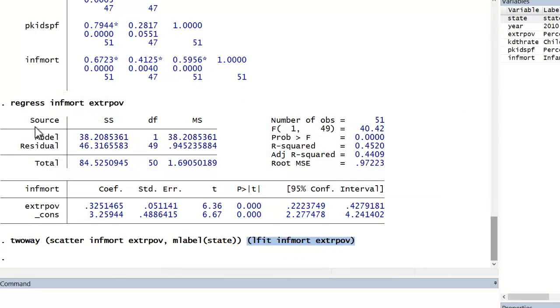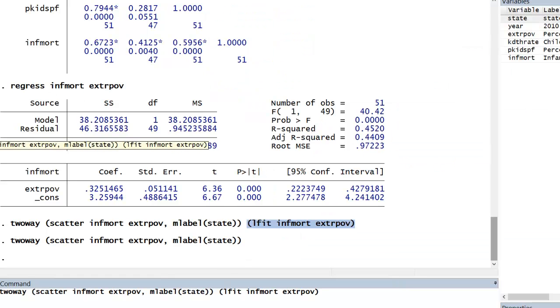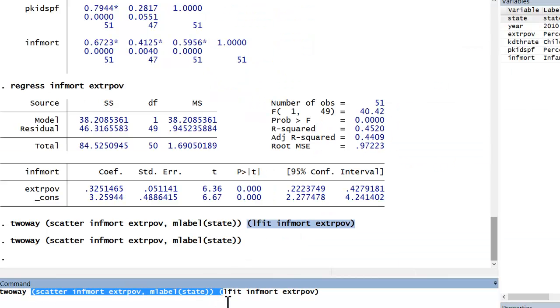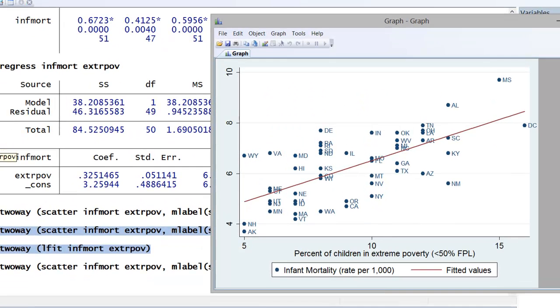If I wanted to run these separately, I could. Let's just go ahead and remove lfit. There's the separate scatter plot. Or I can just run the fitted line graph. And again, here are the two basic commands. Let's go ahead and pull back up the two graphs together.